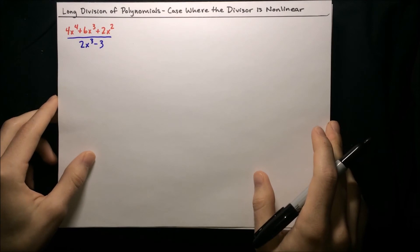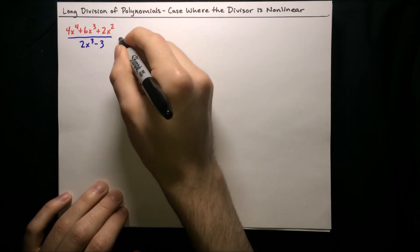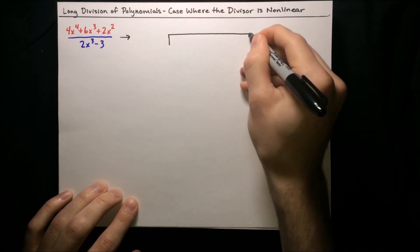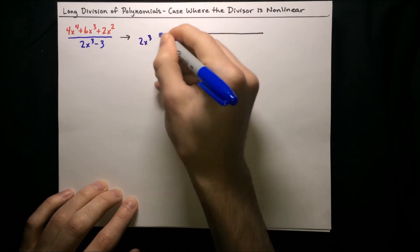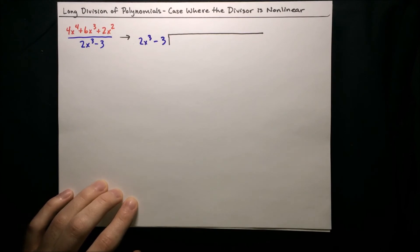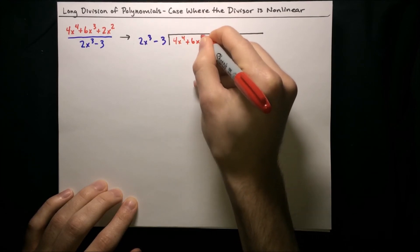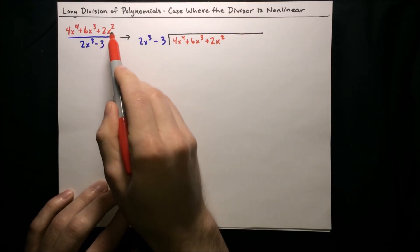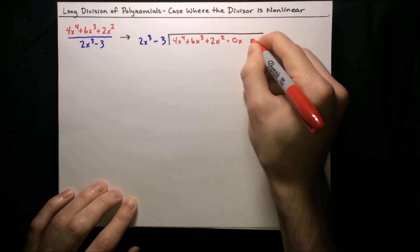Here is a similar example, except this time the divisor has an even higher degree — this is a third degree divisor. Our setup is the same: set up a long division diagram with the divisor 2x to the third minus 3 on the outside, and the dividend 4x to the fourth plus 6x to the third plus 2x squared on the inside. We're missing an x term and a constant term, so those coefficients are 0 — plus 0x plus 0.